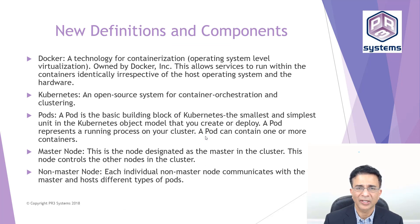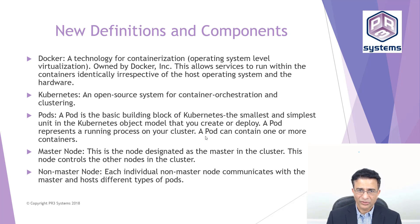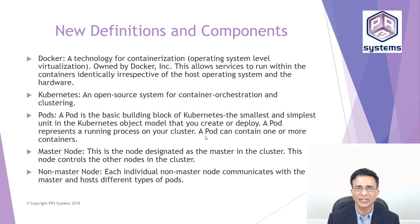Before we go to the architecture diagram of Enterprise Search, we need to define a couple of terms. Enterprise Search uses a containerization technology called Docker. A container is a standalone module which encapsulates services that run within it, allowing those services to run in an identical way irrespective of the host operating system or hardware. The second definition is Kubernetes — an open source system for container orchestration and clustering.